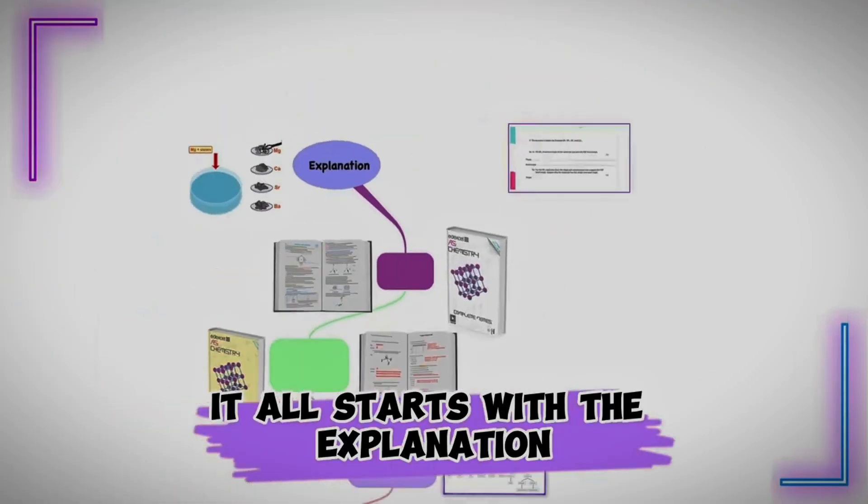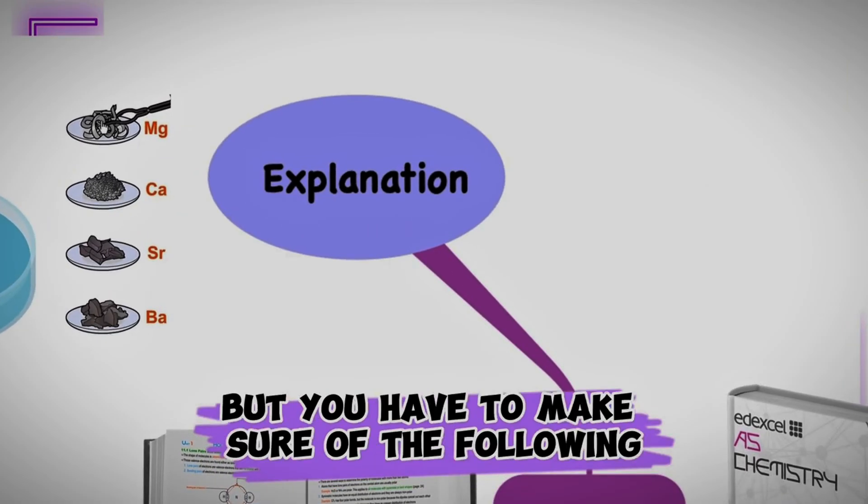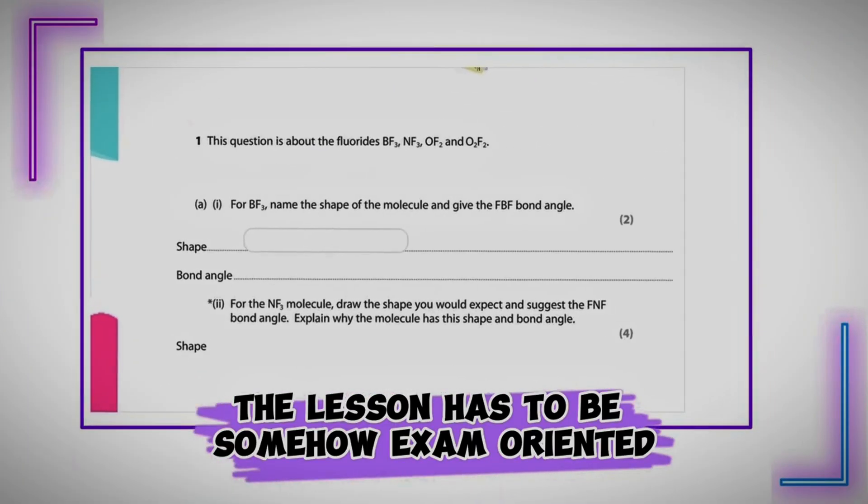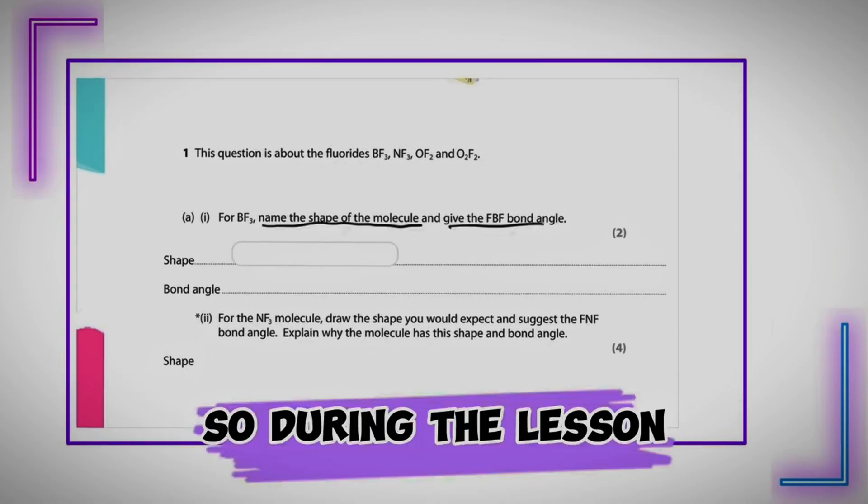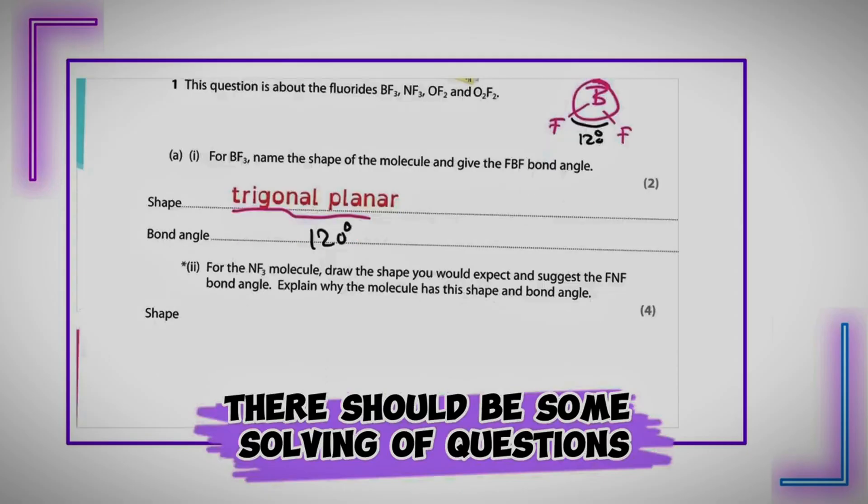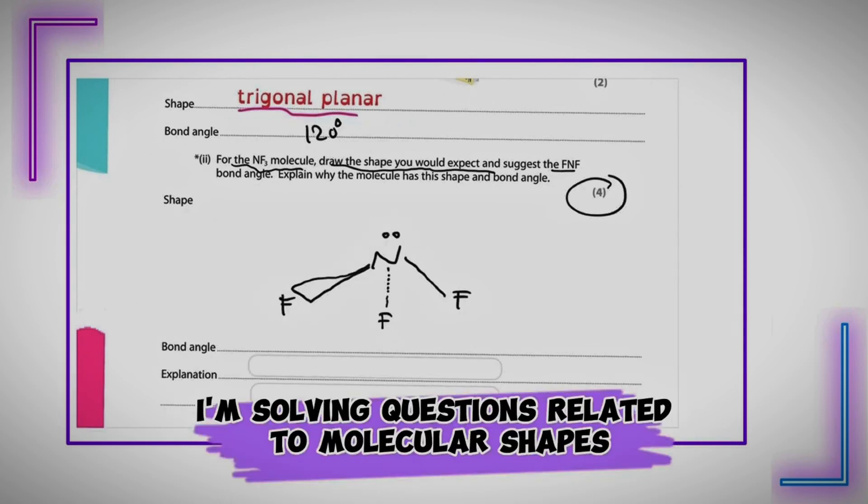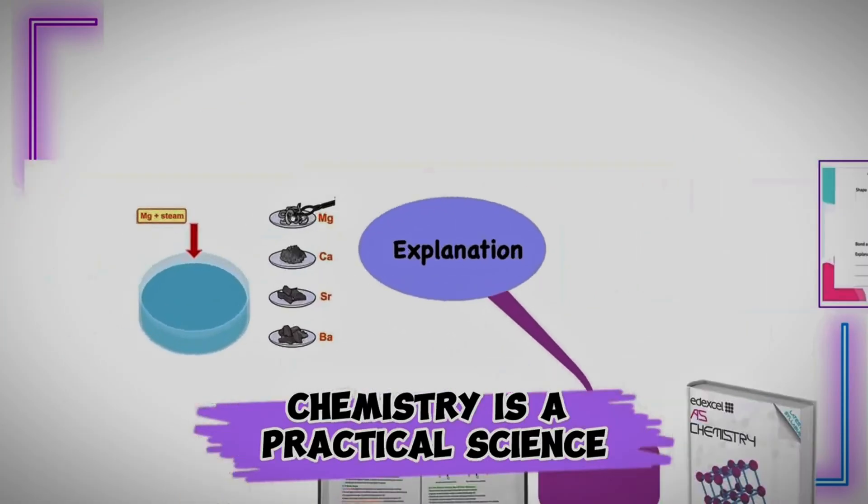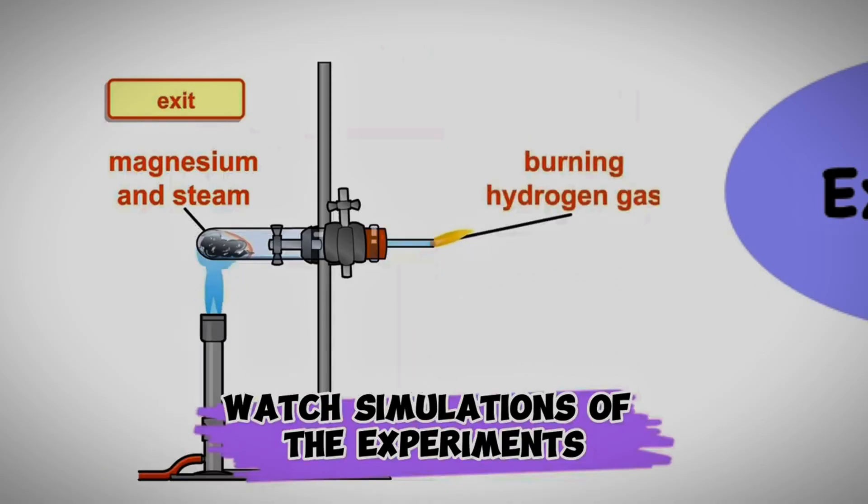It all starts with the explanation. This could come from your school teacher or from an online session. But you have to make sure of the following. First of all, the lesson has to be exam oriented, has to be related to your exam board. So during the lesson, there should be some solving of questions that are related to your exam. Like in this case, I'm solving questions related to molecular shapes from unit 1 of AS chemistry. The explanation should also involve the experiment. Chemistry is a practical science. So you should do these experiments in hand, or at least watch simulations of the experiments.